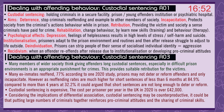Many members of wider society think giving offenders long custodial sentences, especially in difficult prison environments, is an appropriate punishment that provides suitable retribution for victims. However, many ex-inmates re-offend — 77% according to one 2020 study — suggesting prisons may not deter or reform offenders, only incapacitate. As re-offending rates are much higher for short sentences of less than 6 months (84.9%) compared to more than 4 years (32.2%), it could be argued shorter sentences are just not long enough to deter or reform. Custodial sentencing is also expensive — over £42,000 per prisoner per year in the UK in 2020. Considering the implications of differential association, custodial sentencing may be counterproductive, as putting large numbers of criminals together reinforces pro-criminal attitudes and sharing of criminal skills.